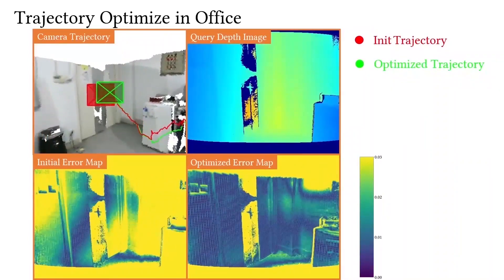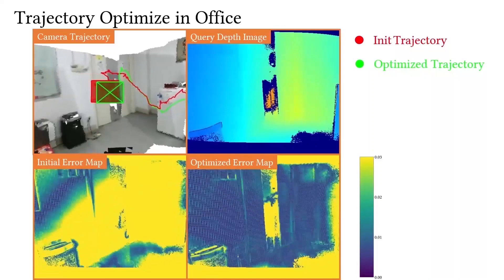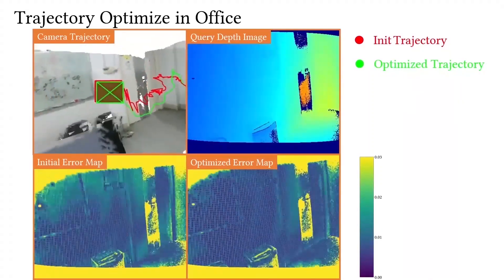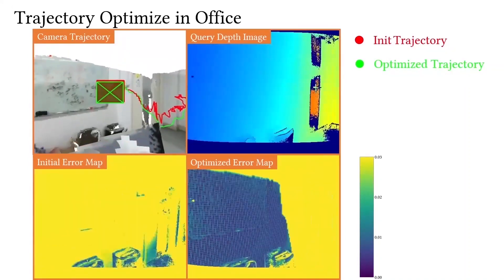In this case, we perform a long-distance scan in a known indoor scene and relocalize for each frame. The red trajectory is obtained by the current method, and the green trajectory is optimized through our framework. Our optimized trajectory is more stable and continuous.